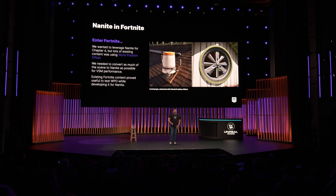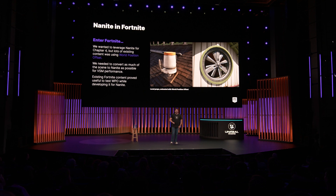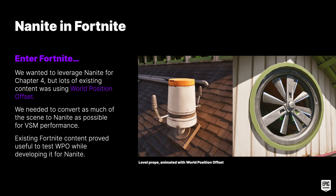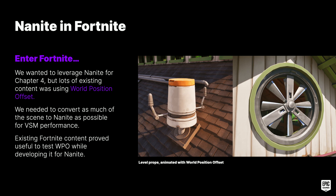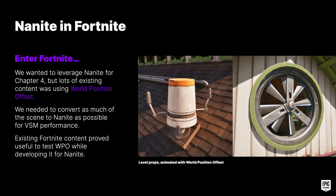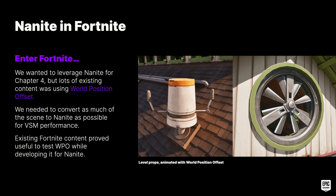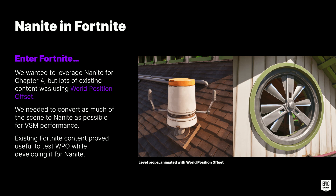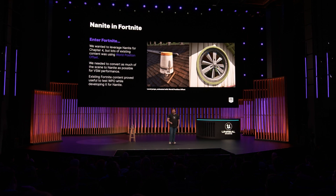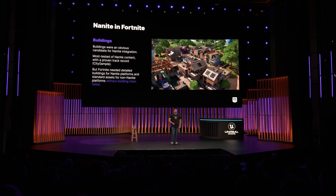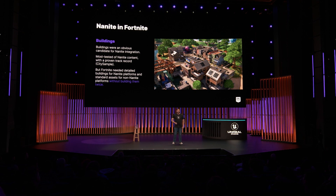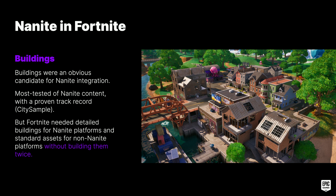Though we knew early on that we wanted to leverage Nanite in Fortnite Chapter 4, there was a lot of existing content that prevented wholesale adoption, mostly using world position offset like animated props. As Paul mentioned, these objects tended to create problems with VSM performance, so it became important to get WPO working with Nanite and get these assets converted. Buildings were the most obvious candidate for Nanite integration as it had already proven to handle large cities with ease. Paul showed us how artists generate assets worthy of Nanite while still providing standard assets for non-Nanite platforms.